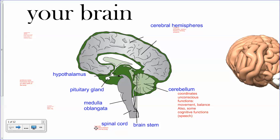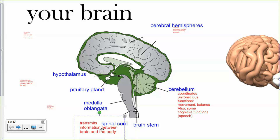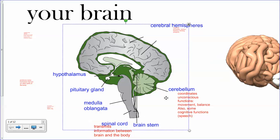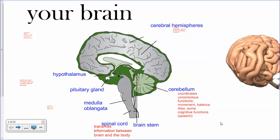Brainstem — the spinal cord is easy. This is just connecting the brain to the rest of the body. You don't want to damage your spinal cord by breaking your neck or something like that, because that can prevent you from transmitting messages to your body, and then you become paralyzed.